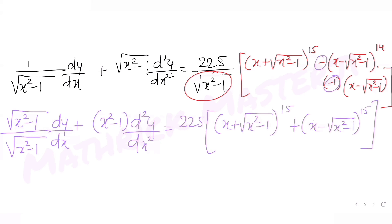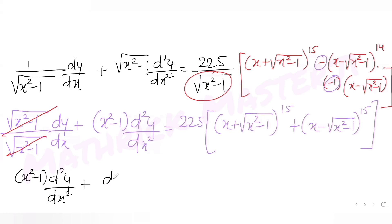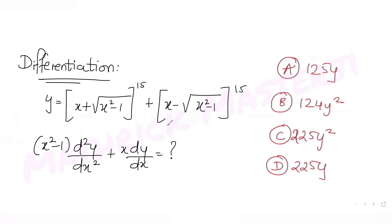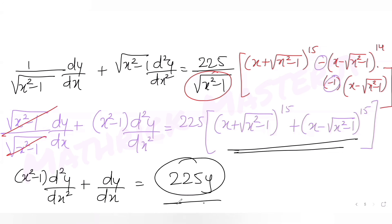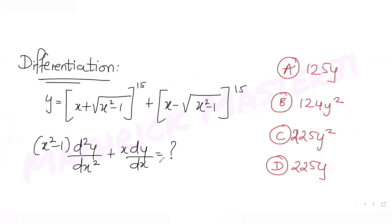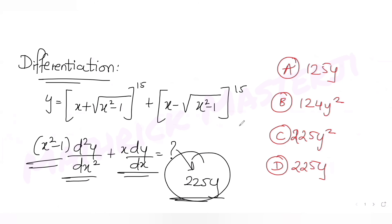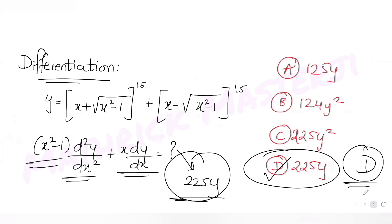The bracket on the right is nothing but y, so we get (x²-1)·d²y/dx² + x·dy/dx = 225y. Looking at the question, this matches option D, so option D (225y) is the correct answer.